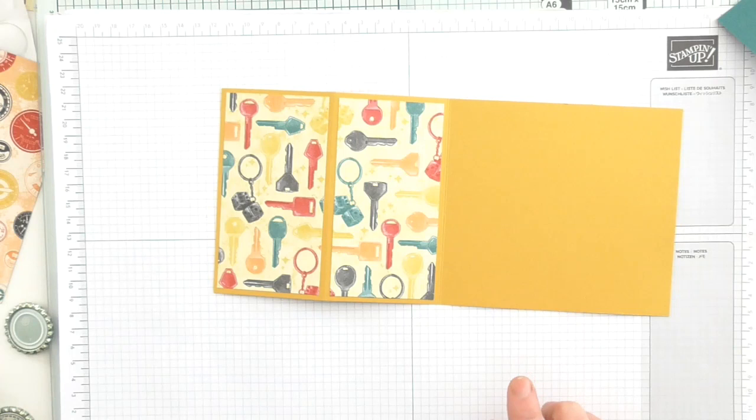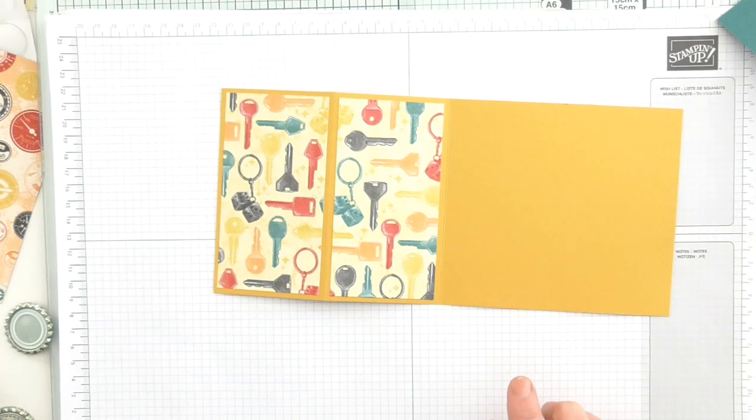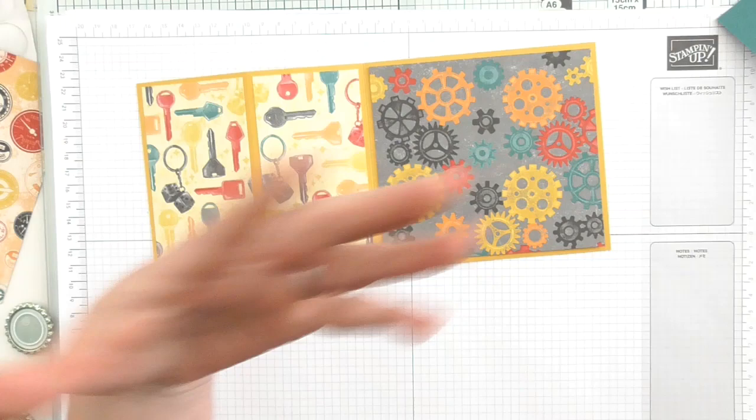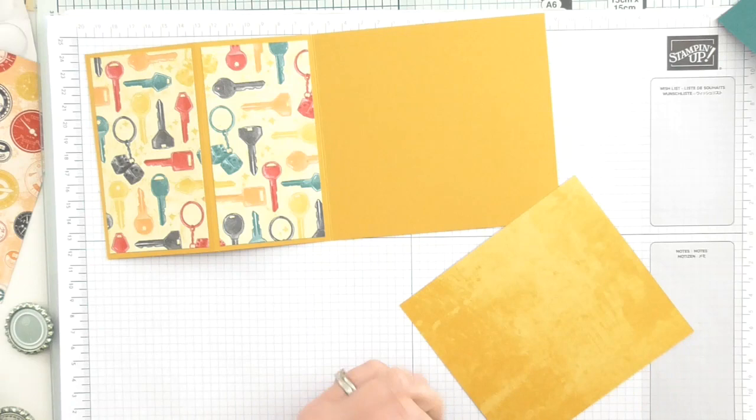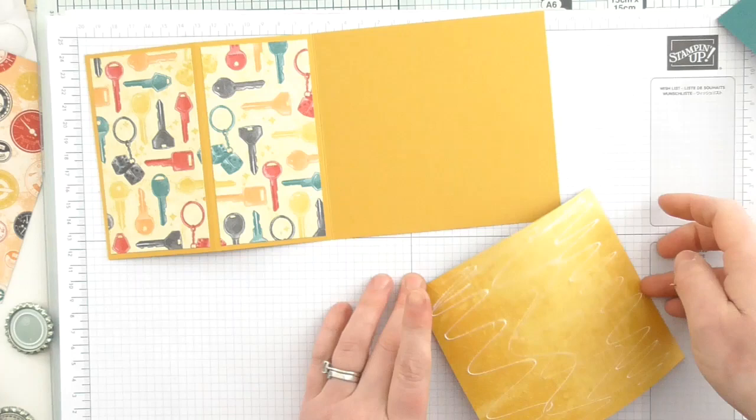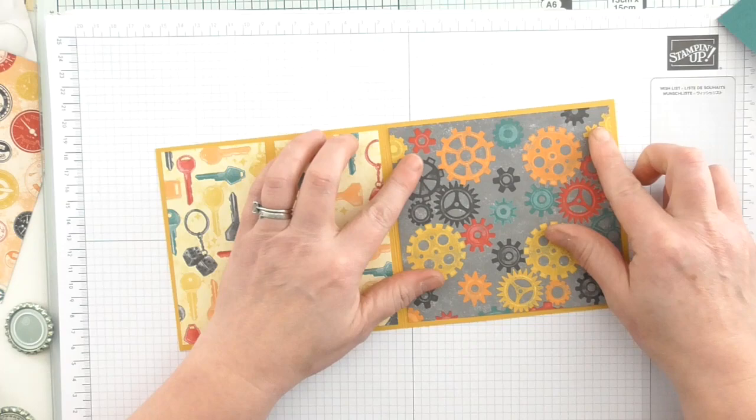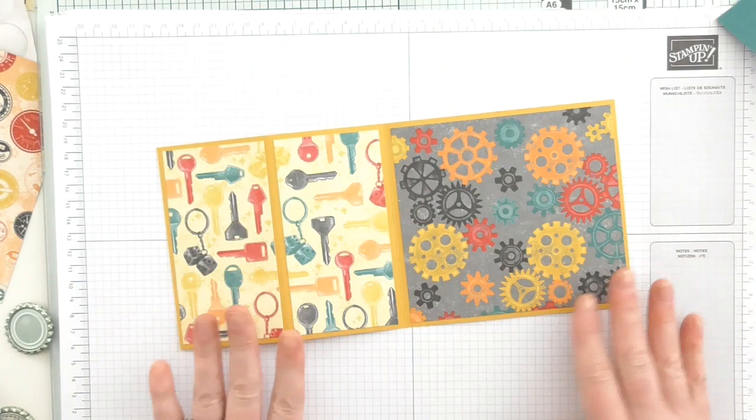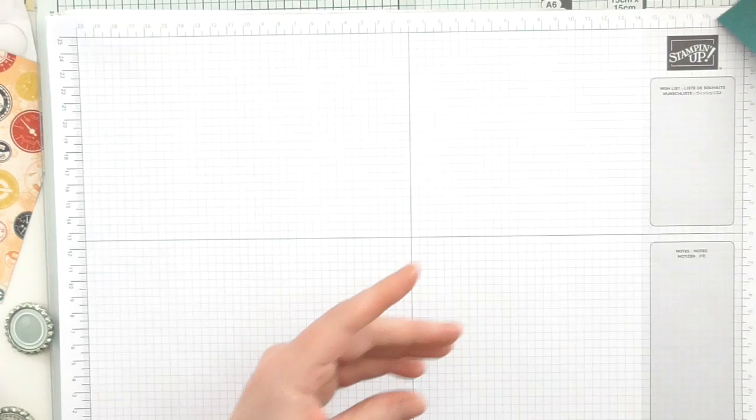These two pieces here need to measure 2 and a half by 4 and three quarters, both the same. This third piece here needs to measure 5 and a quarter by 4 and three quarters. I've chosen a completely different paper to showcase some of the different ones. I don't care if they clash, the colors are all matching.